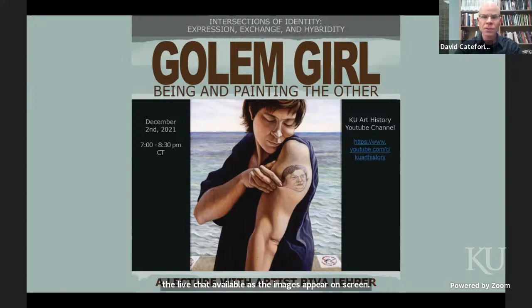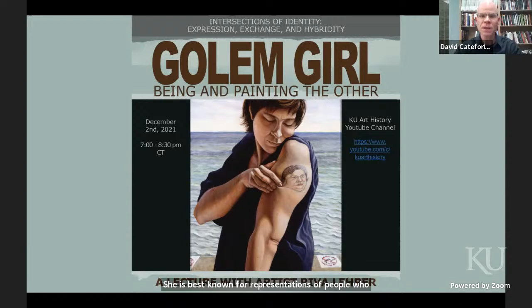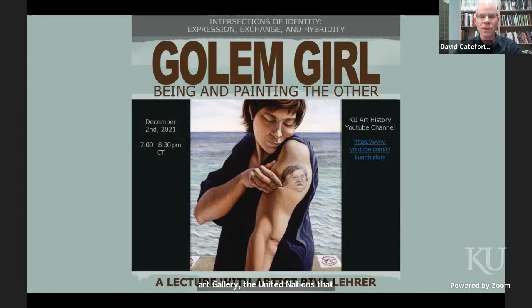Now I'm honored to introduce this evening's speaker, Riva Lehrer, an artist, writer, and curator who focuses on the socially challenged body. She is best known for representations of people whose physical embodiment, sexuality, or gender identity have long been stigmatized. Ms. Lehrer's work has been seen in venues including the National Portrait Gallery of the Smithsonian Institution, Yale University Art Gallery, the United Nations, the National Museum of Women in the Arts, the Arnott Art Museum, the Cordova Museum, Fry Museum, and the Chicago Cultural Center.